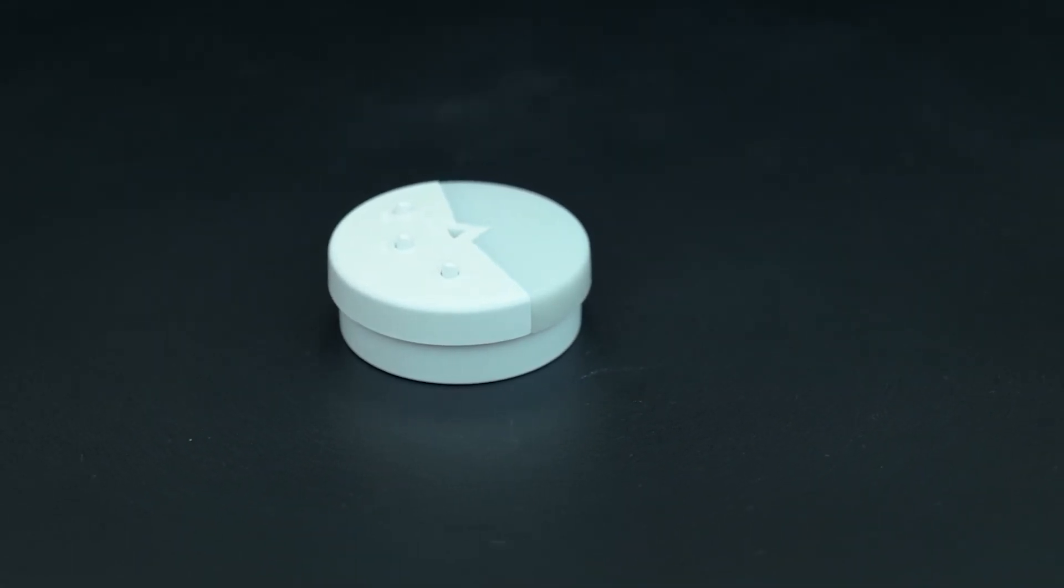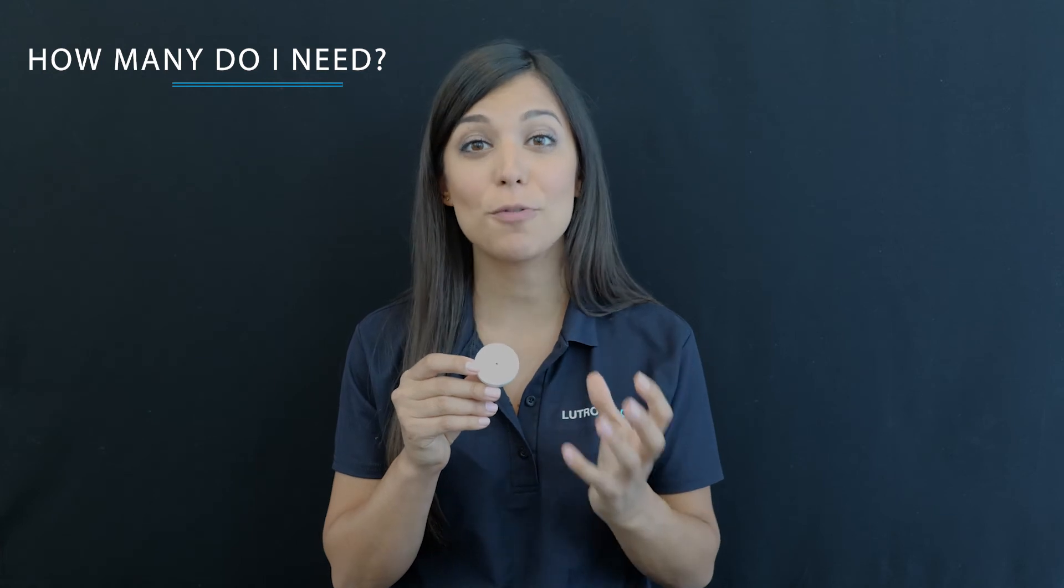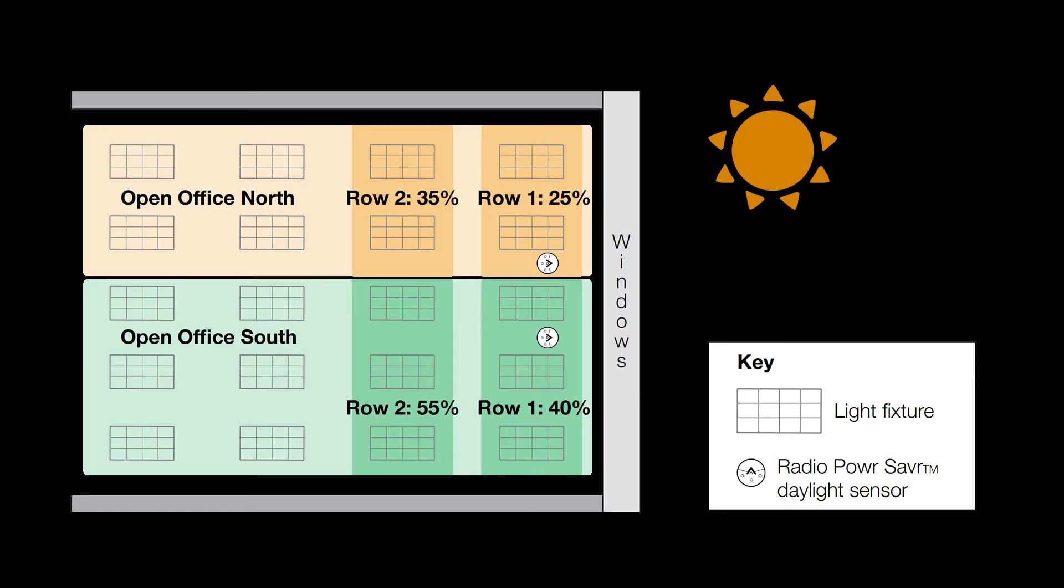The daylight sensor detects the natural light level coming into the space and lowers the level of electric light to even out the light level and help conserve energy. You will need one daylight sensor per group of lights in an area, and it's possible to set up multiple daylight rows.